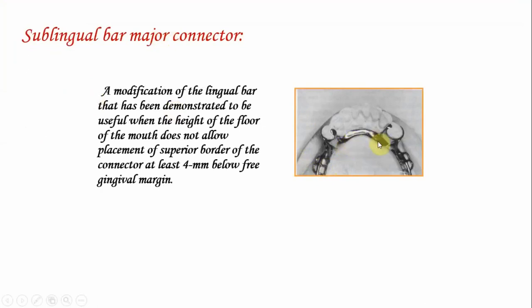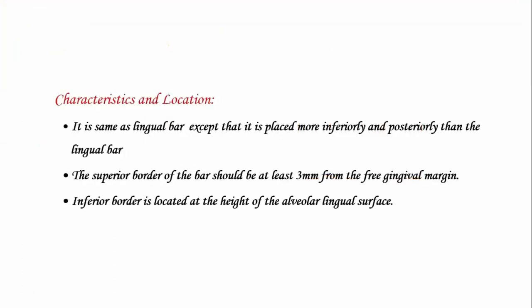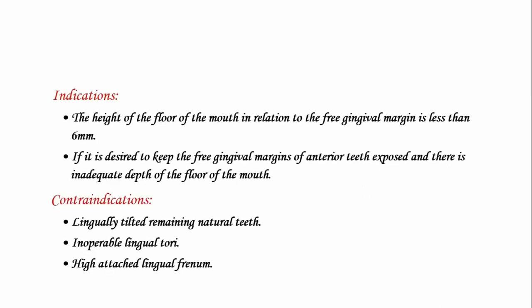The sublingual bar is a modification of the lingual bar used when the height of the floor of the mouth does not allow placement of the superior border of the connector at least 4 mm below the free gingival margin. It is placed more posteriorly and more inferiorly than the lingual bar. The superior border should be at least 3 mm from the free gingival margin, and the inferior border is at the height of the alveolar lingual surface. Indications: when the height of floor of the mouth in relation to the free gingival margin is less than 6 mm. Contraindications: lingually tilted remaining natural teeth, inoperable lingual tori, and highly attached lingual frenae.